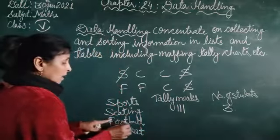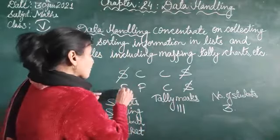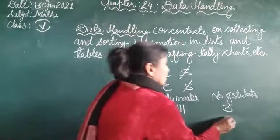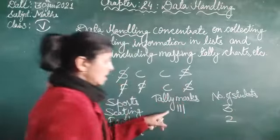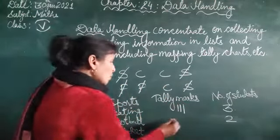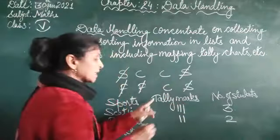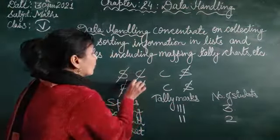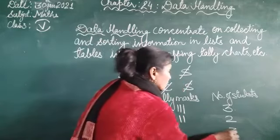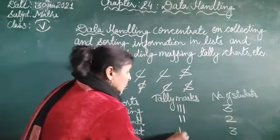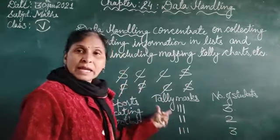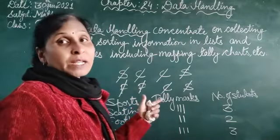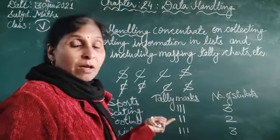Now then comes to football. 1, 2, 3. Again 3 students playing cricket. 1, 2, 3. These are the tally marks. So in this way we can use the tally marks in tabular form.